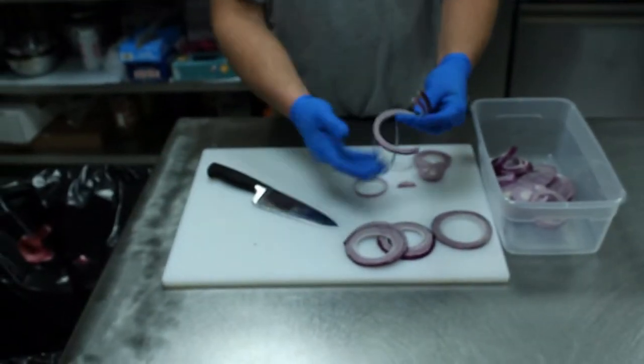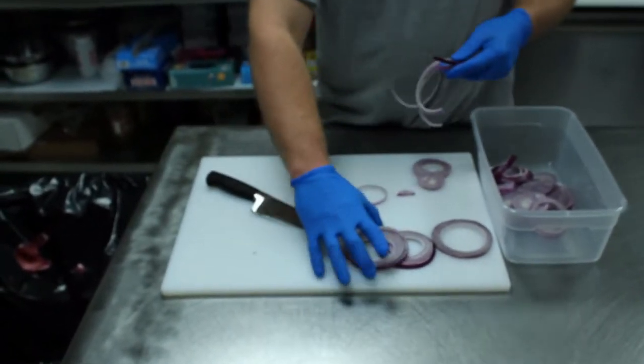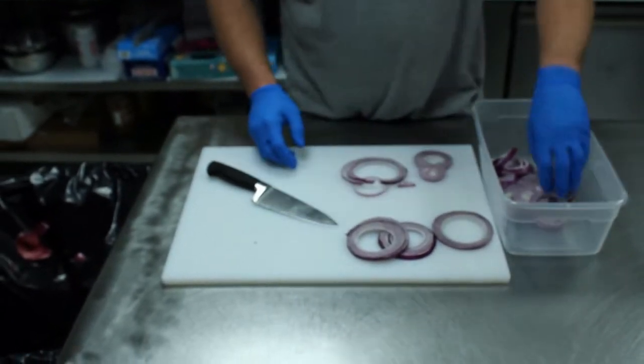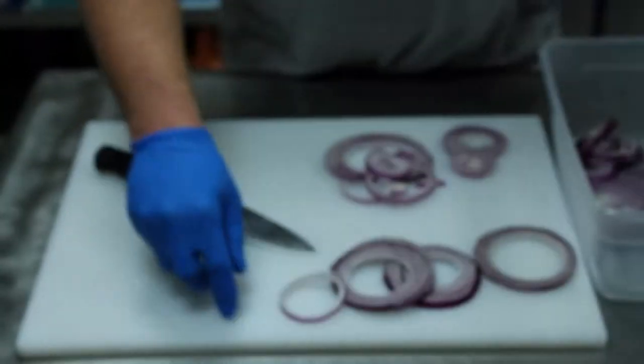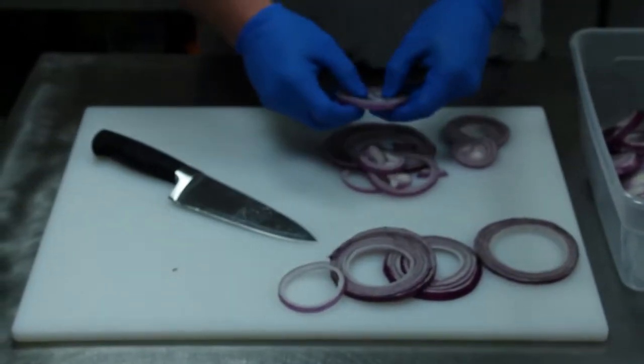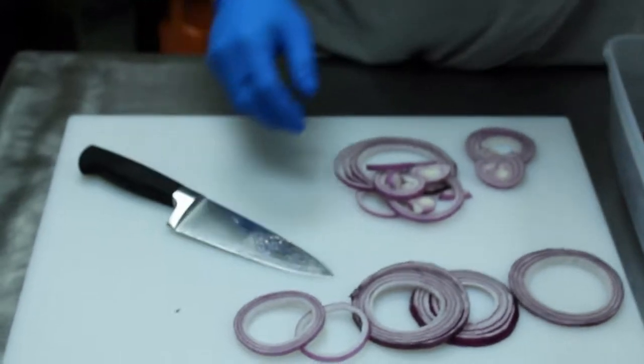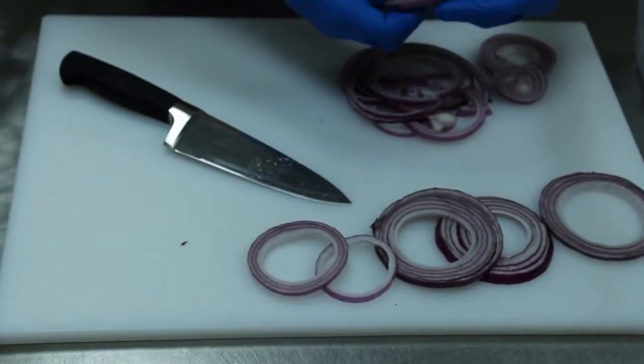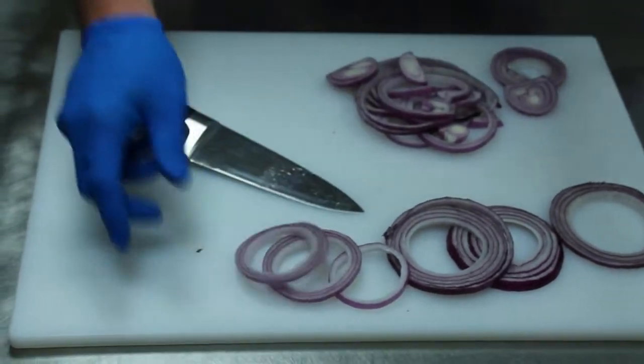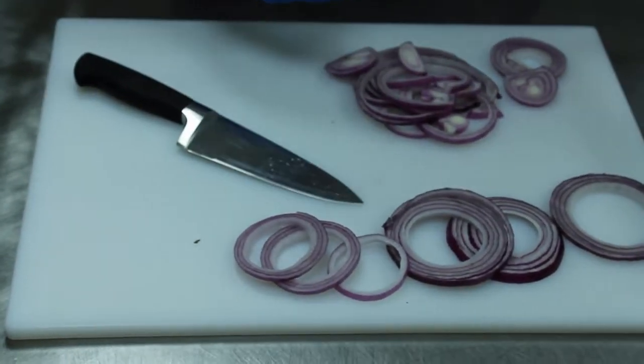So, the ones that aren't intact circles, we want to pull out for dicing. So, that's getting diced. That can go on a sandwich. And these are strong onions. So, this can be a tough job to do sometimes.